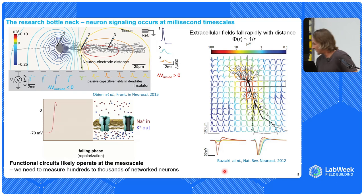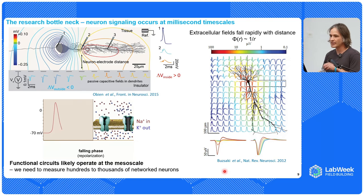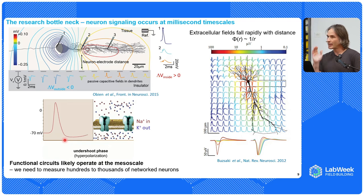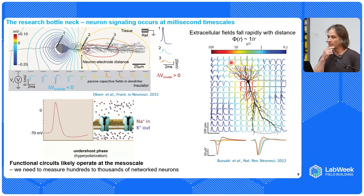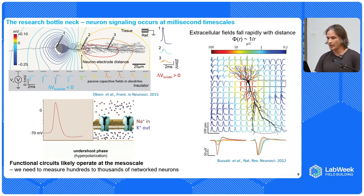The big problem here is a research bottleneck. Neuron signaling occurs at millisecond timescales. When a neuron fires an action potential, this occurs over a millisecond duration, and the change in potential is close to 100 millivolts. Outside the cell, those fields attenuate very quickly, falling off roughly inversely with the distance from the soma. Functional circuitry likely operates at the mesoscale, which means we need to measure hundreds of thousands of network neurons to understand how the neural code operates.